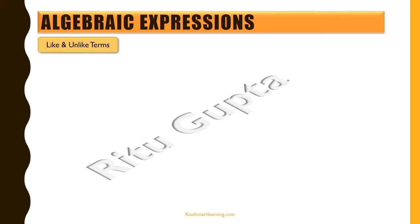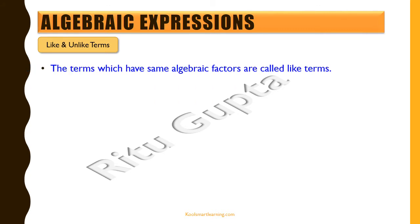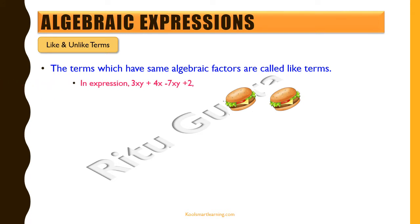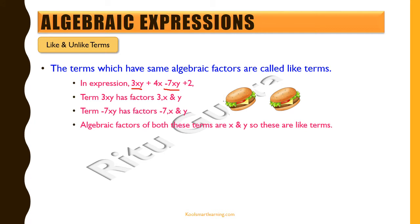Now let's understand the difference between like and unlike terms. Terms which have the same algebraic factors are called like terms. Take the expression 3xy plus 4x minus 7xy plus 2. The terms 3xy and minus 7xy are like terms: the factors of 3xy are 3, x and y, and the factors of minus 7xy are minus 7, x and y. The algebraic factors of both terms are x and y, so these are like terms. The numeric factors — 3 and minus 7 — are different, but the numeric factor does not decide whether terms are like or unlike; only the algebraic factors do.